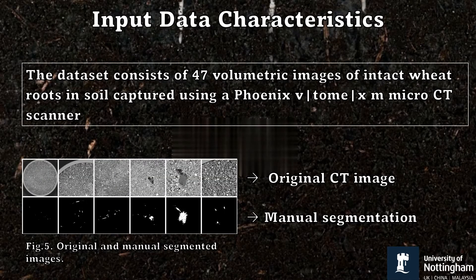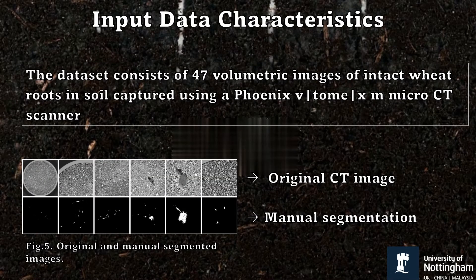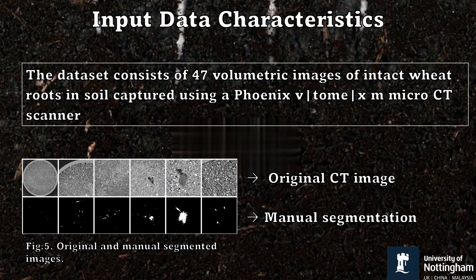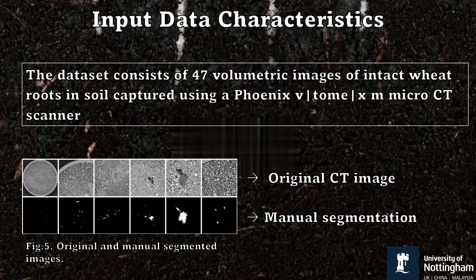The input dataset consists of 47 volumetric images of intact wheat roots in soil captured using a CT scanner.